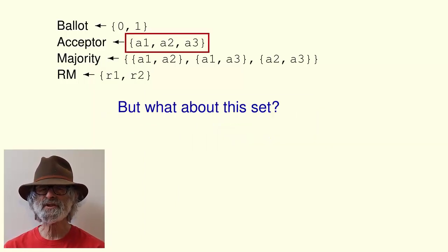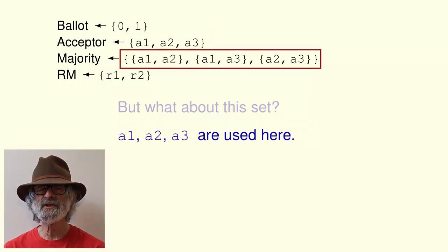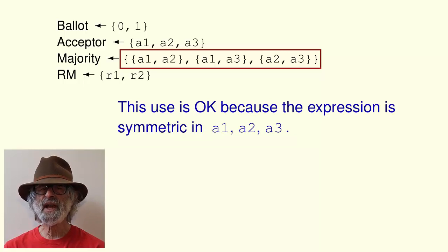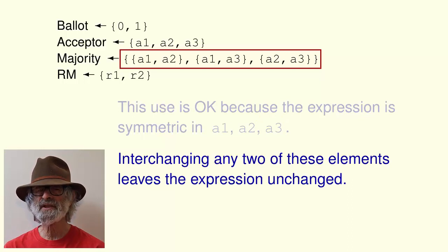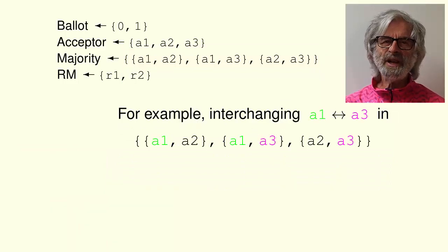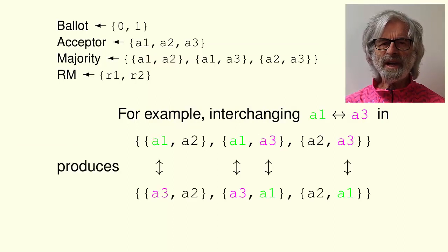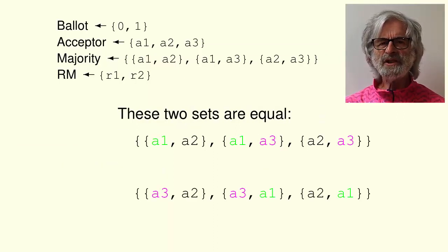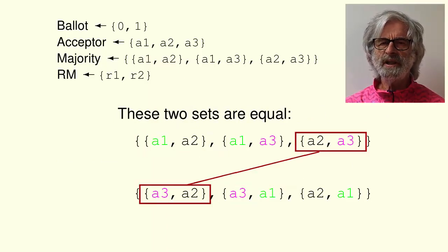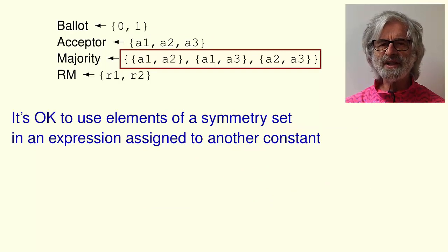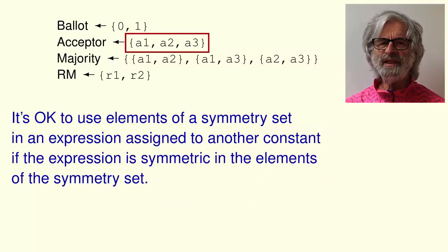The set we assign to RM can be a symmetry set because its elements aren't used elsewhere. But what about the set we assign to acceptor? Its elements are used in the value assigned to majority. But this use is okay because the expression they appear in is symmetric in the elements of the set we assign to acceptor. Remember, this means that interchanging any two elements of that set leaves the expression unchanged. For example, if we interchange A1 and A3 in the expression, we get this expression. And these two expressions are equal because they describe sets with the same three elements: 1, 2, 3.